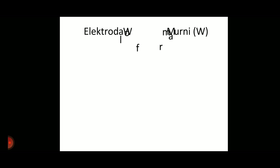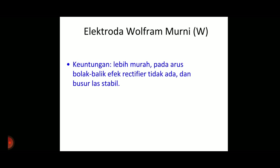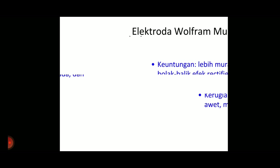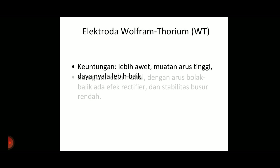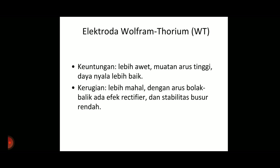Elektroda tungsten itu ada yang murni, ada yang campuran. Kalau murni, itu biasanya warnanya kodenya hijau untuk ngelas aluminium. Ini keuntungan dan kerugian untuk elektroda yang murni. Terus elektroda campuran thorium - kalau murni biasanya untuk mengelas aluminium, kodenya warna hijau. Kalau untuk campuran thorium, itu warnanya merah kodenya di ujungnya, untuk mengelas baja karbon. Keuntungan lebih awet, kerugian lebih mahal.